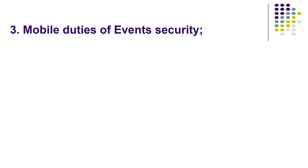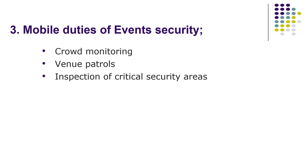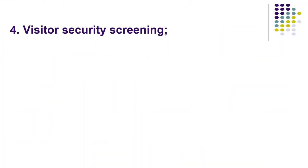Number three: mobile duty. Mobile duty is the opposite of static duty — the security guard will go on rounds. Crowd monitoring: you move from one place to another to monitor the crowd. Venue patrol: the security guard patrols around the venue to identify abnormal incidents. Inspection of critical security areas: some areas are very critical for event safety and the security guard patrols to inspect them. Incident response team: the mobile security personnel are part of the incident response team and will take action if an incident occurs.